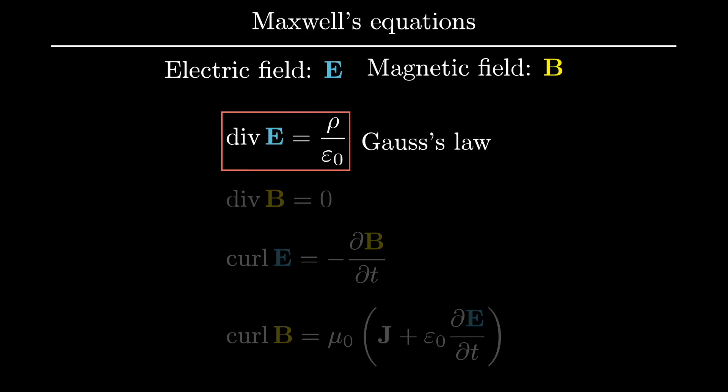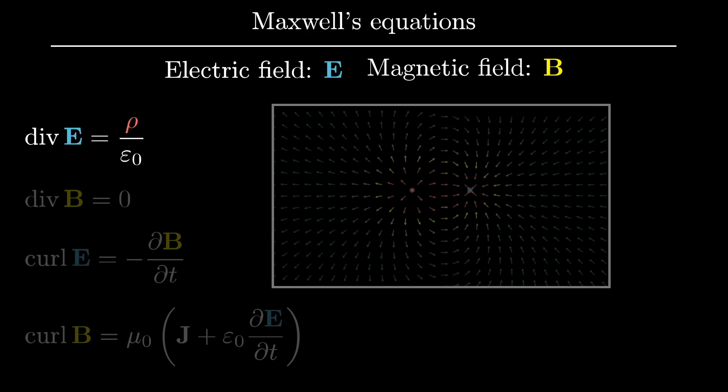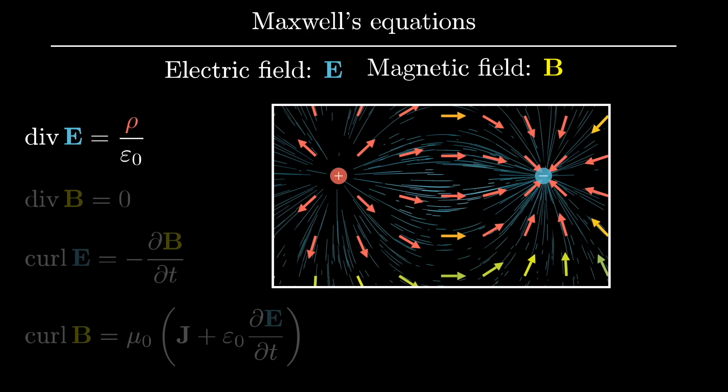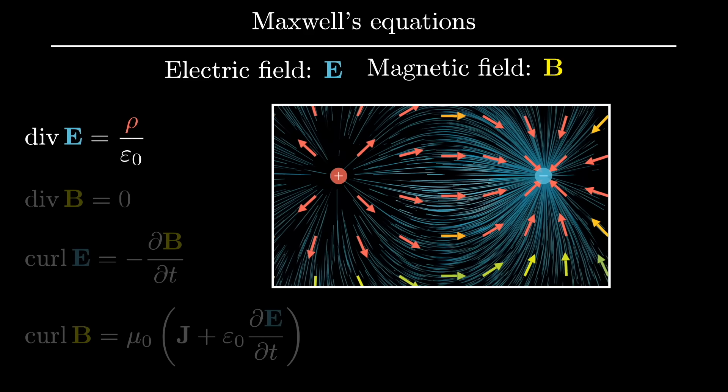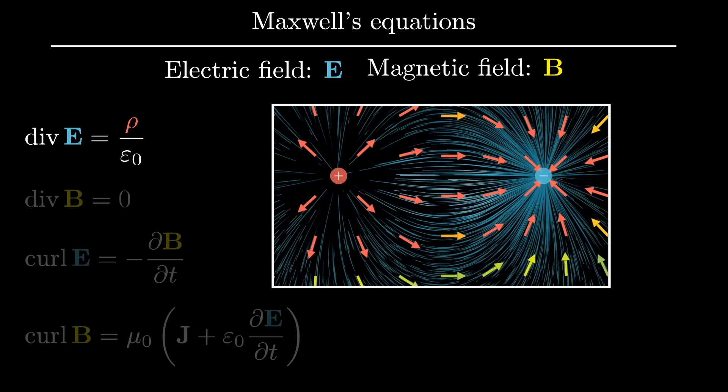This top one, for example, is Gauss's law, stating that the divergence of an electric field at a given point is proportional to the charge density at that point. Unpacking the intuition for this, you might imagine positively charged regions as acting like sources of some imagined fluid, and negatively charged regions as being the sinks of that fluid.